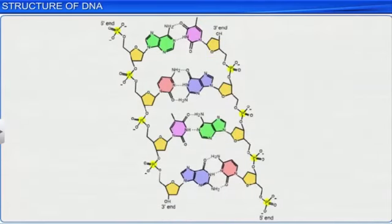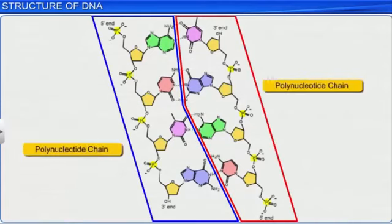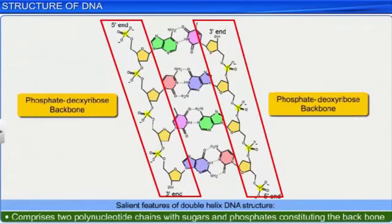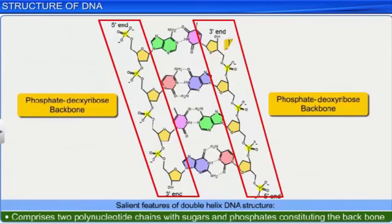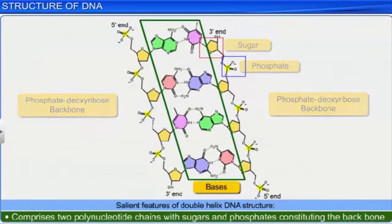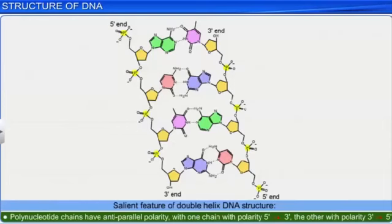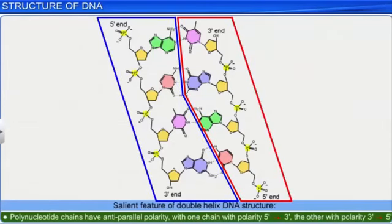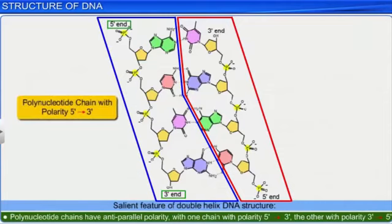A salient feature of the double helix DNA structure is that it comprises two polynucleotide chains. The backbone is constituted by sugar-phosphate, with bases projecting inside. The double helix structure has several other salient features: its two polynucleotide chains have anti-parallel polarity. That is, if one chain has a polarity 5' to 3', the other has 3' to 5'.